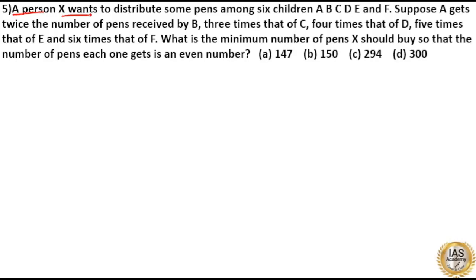A person X wants to distribute some pens among 6 children A, B, C, D, E and F. Suppose A gets twice the number of pens received by B, 3 times that of C, 4 times that of D, 5 times that of E and 6 times that of F. What is the minimum number of pens X should buy so that the number of pens each one gets is an even number?